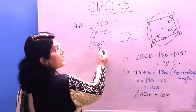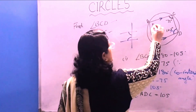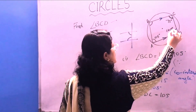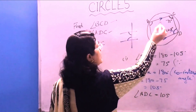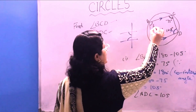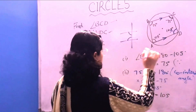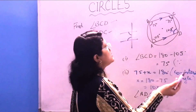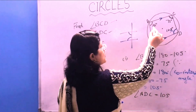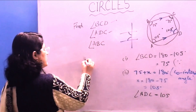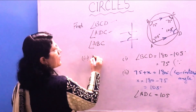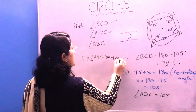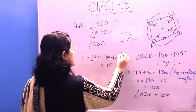Thirdly, we need to find angle ABC. Since ADC and ABC are opposite angles in the cyclic quadrilateral, they are supplementary. If ADC is 105 degrees, then angle ABC equals 180 minus 105, which is 75 degrees.